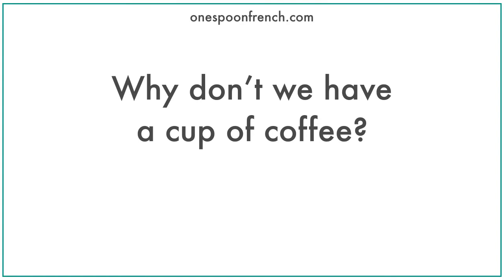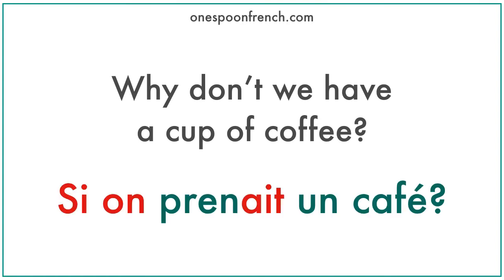The first example is: 'Why don't we have a cup of coffee?' — 'Si on prenait un café.' The verb 'prenait' here is the third person imperfect verb form of the verb 'prendre.' The equivalent of 'prendre' in English is 'take.'